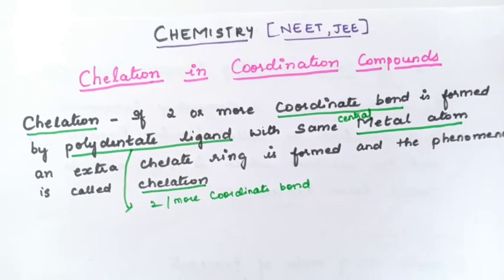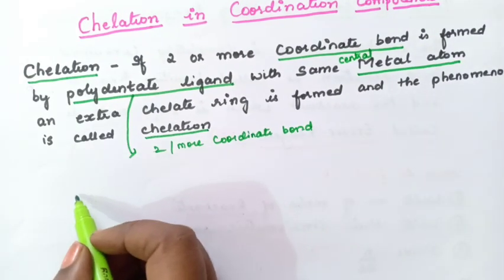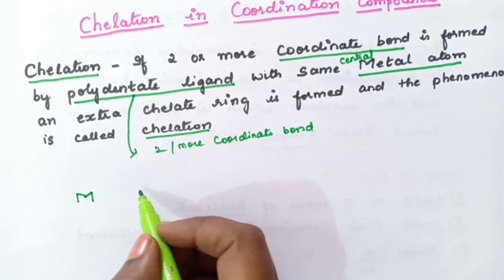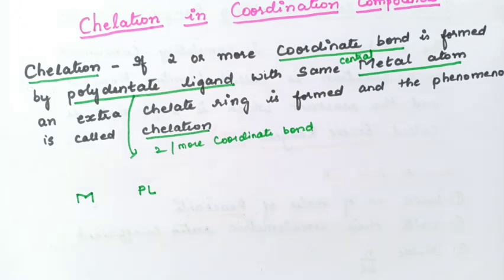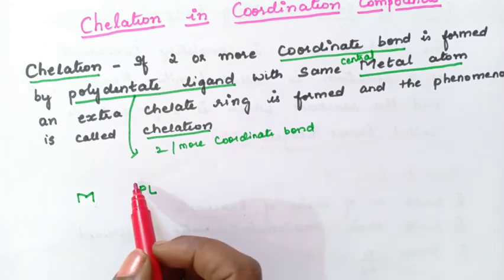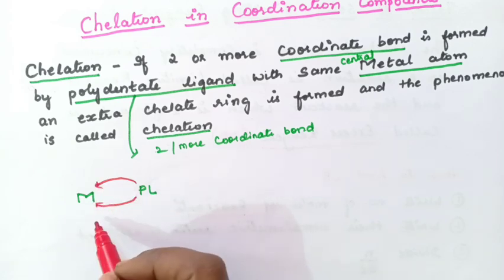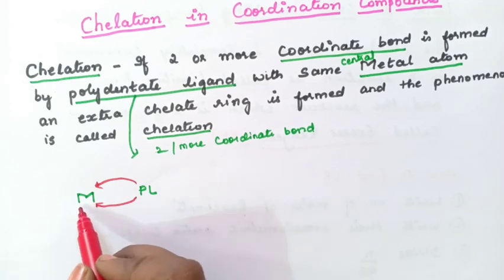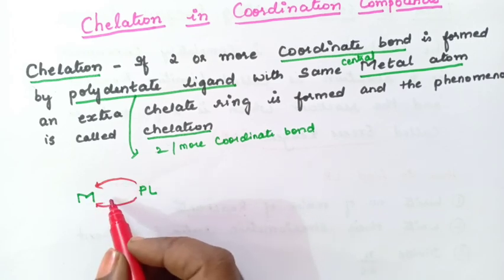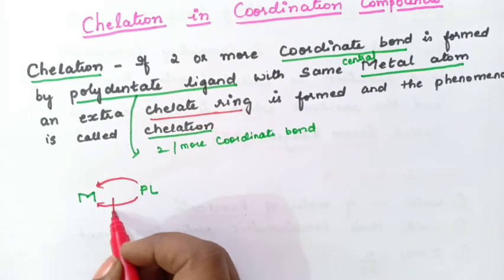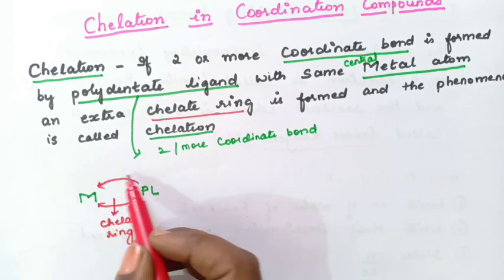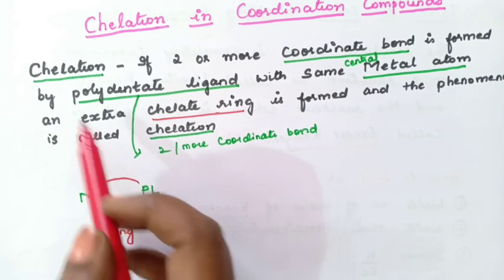Let us understand this definition by taking an example. Suppose I have taken a central metal atom and a polydentate ligand. This polydentate ligand forms two coordinate bonds with the central metal atom — this is one and this is the second. As a result, an extra ring is formed, and this ring is called the chelate ring. This process of formation of an extra ring in the coordination compound is known as chelation.